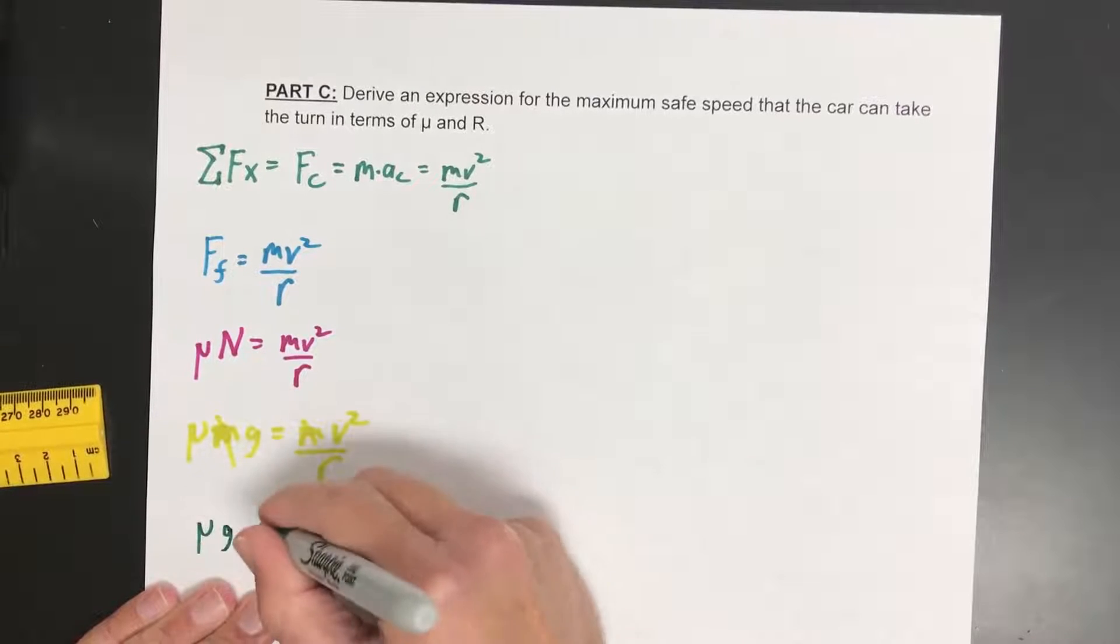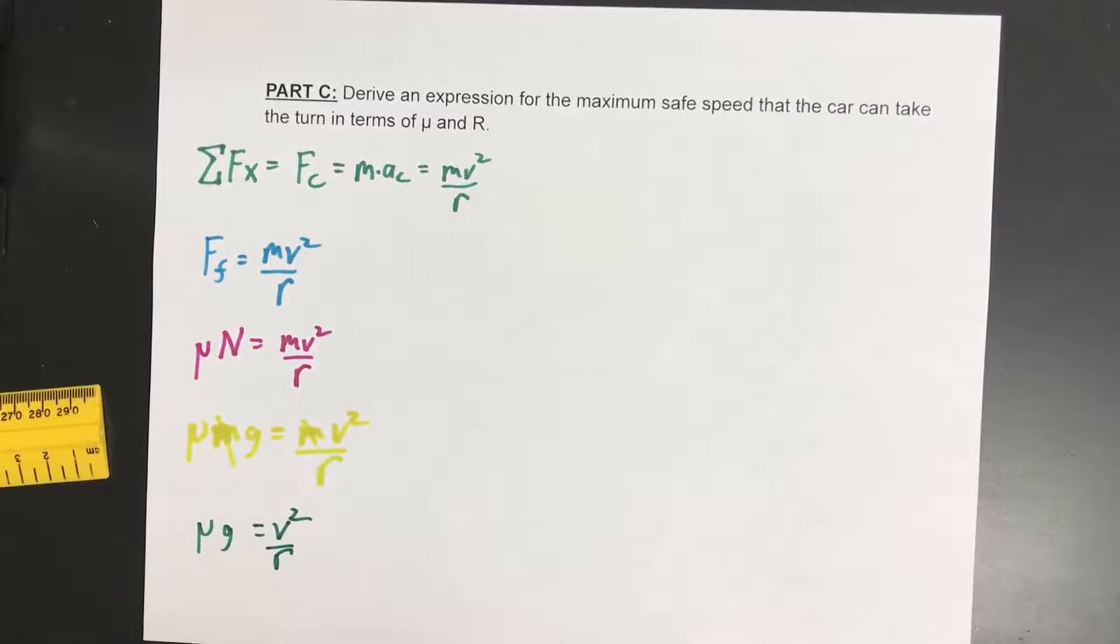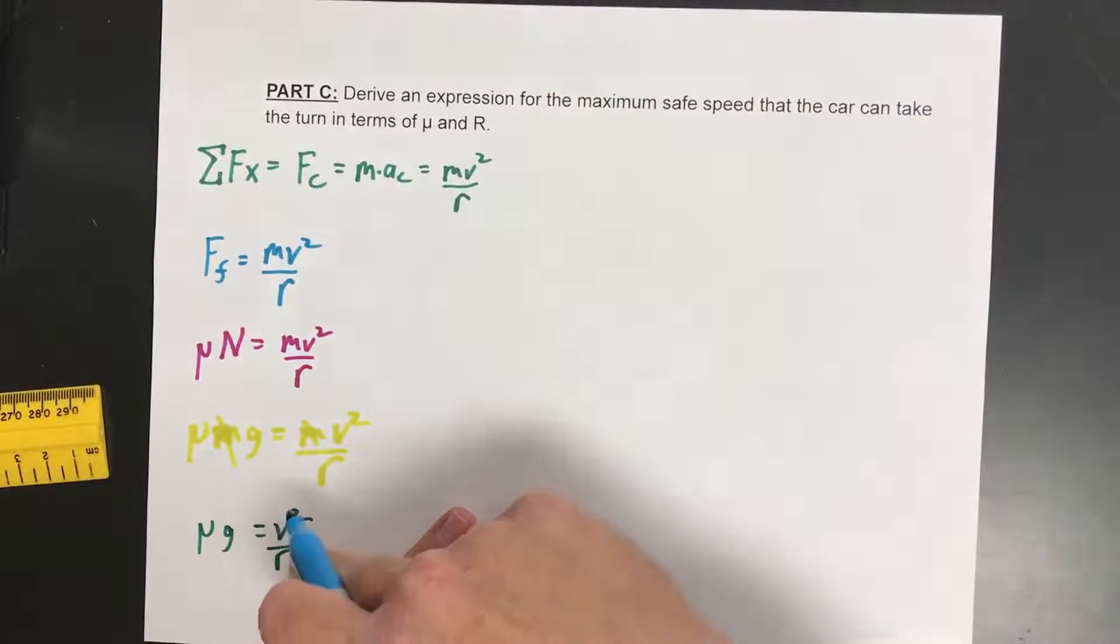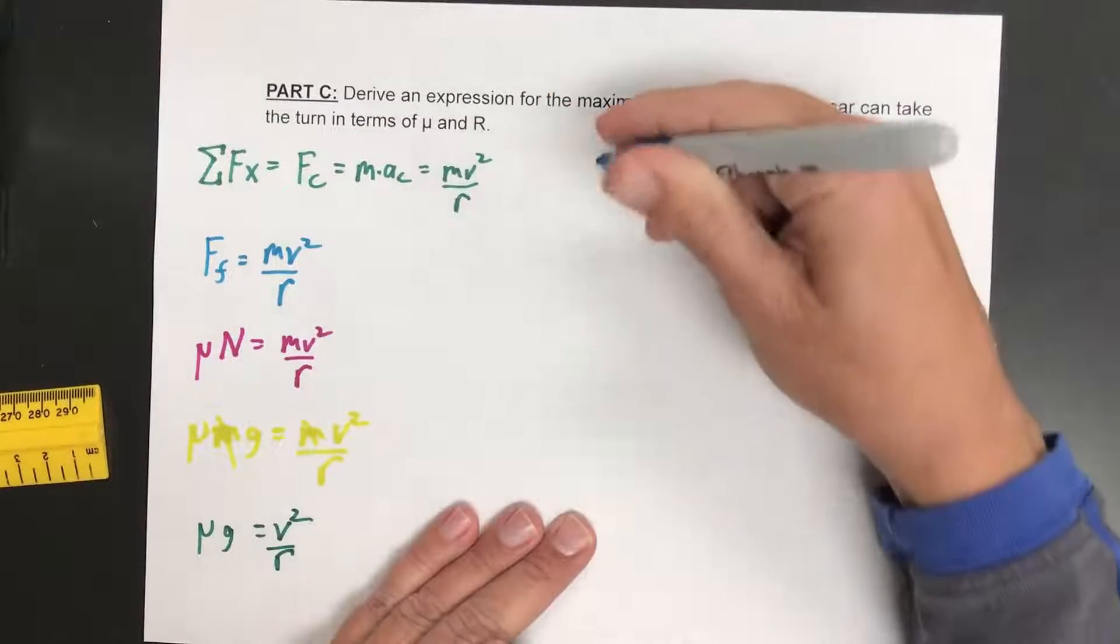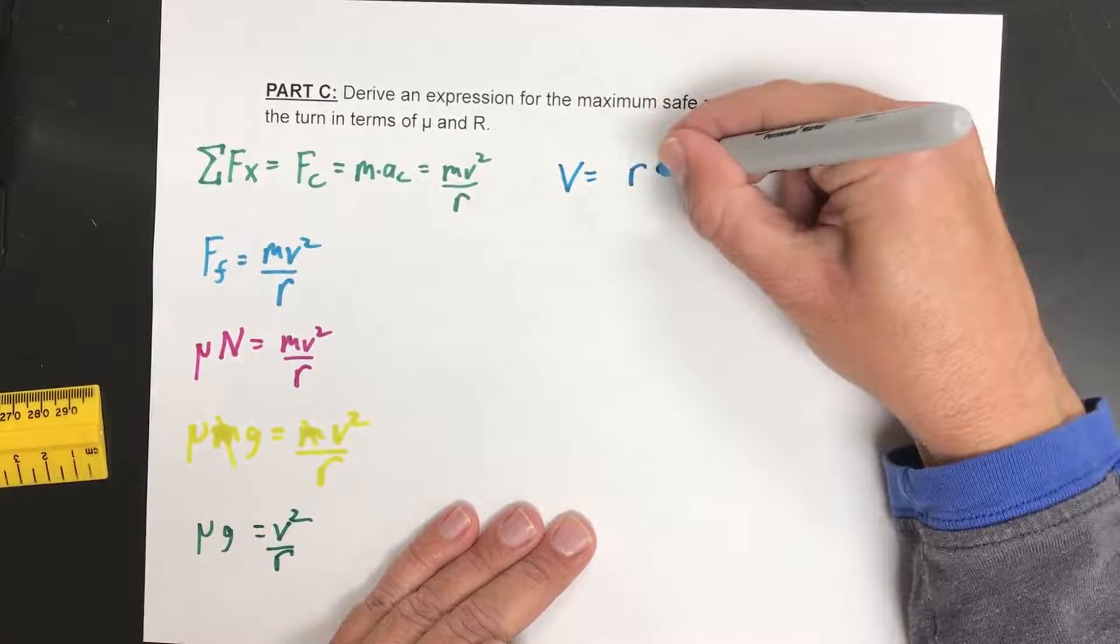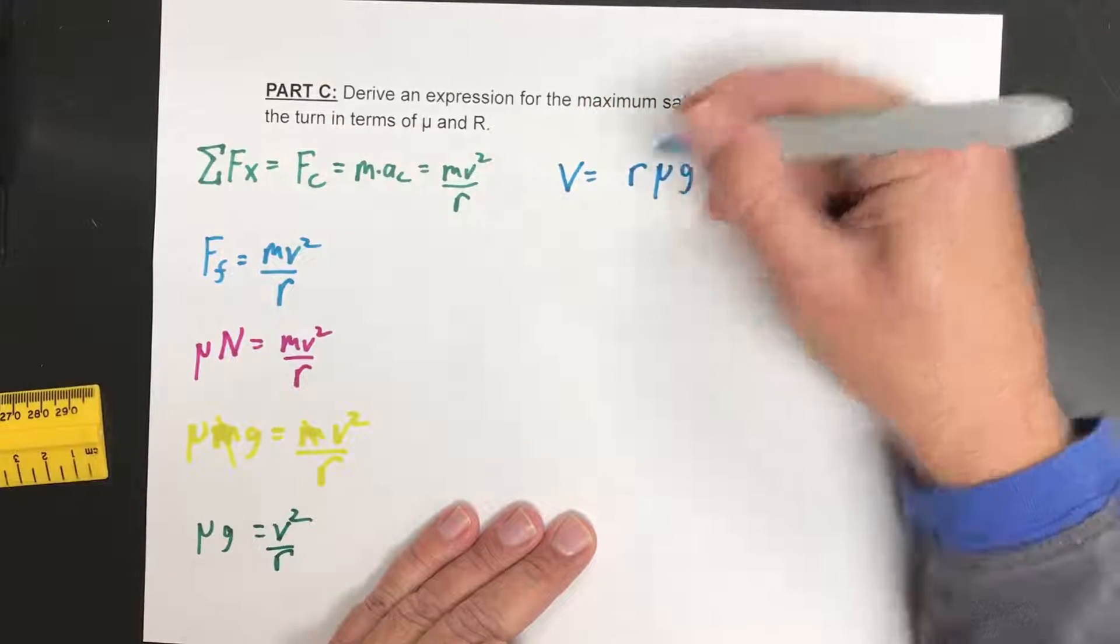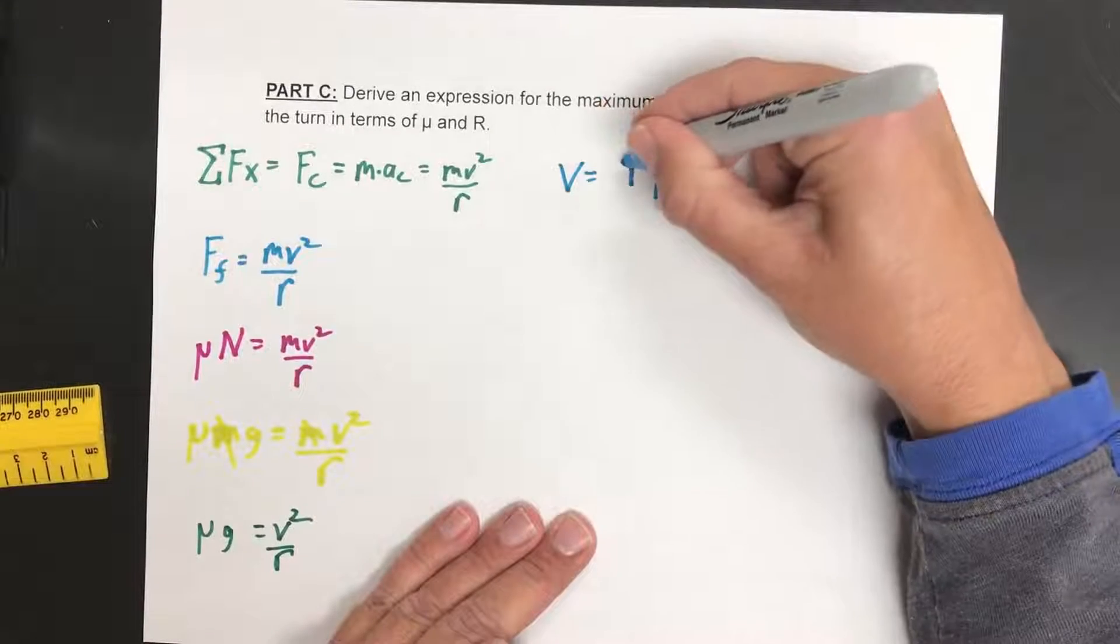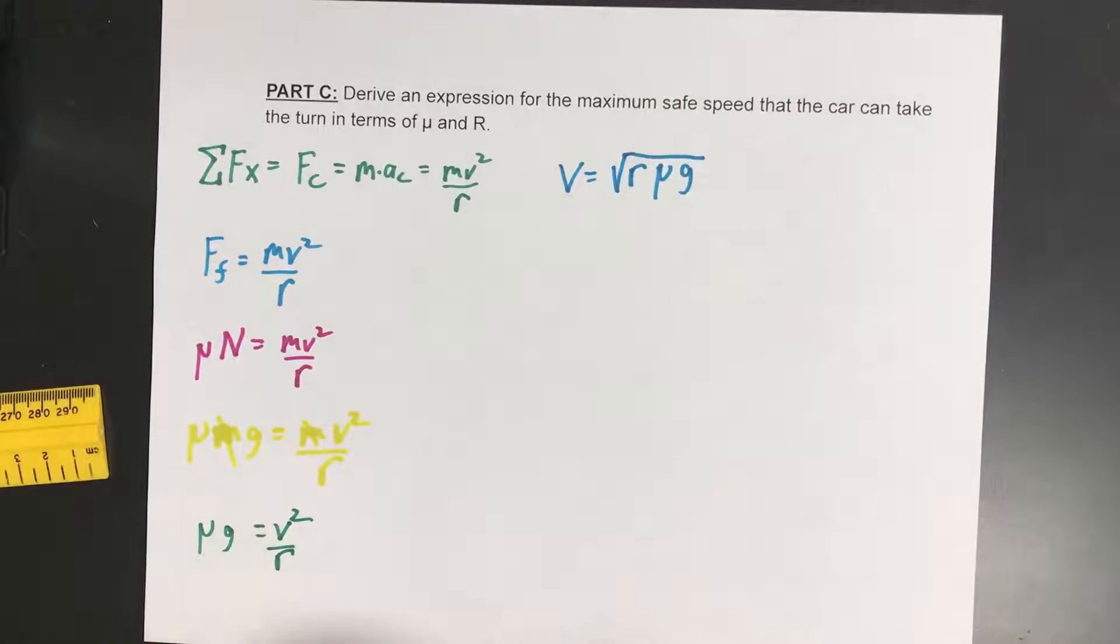So next line then, we got mu times g is equal to v squared over r. So what I'm going to do is multiply my r up to the other side, and actually I'm going to start calling it capital R now because that's what they do. So v squared equals R times mu times g, but that was v squared, so to make it v, we got to take the square root of each side.